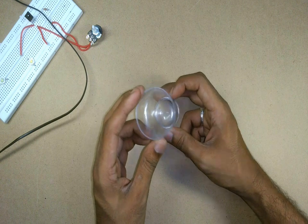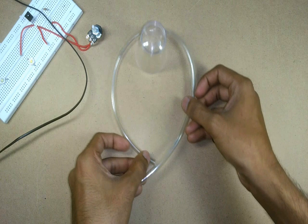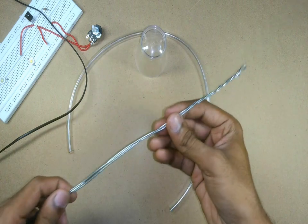We will be using this plastic glass as a reflector and to hold it we will be using this plastic pipe with 3 binding wires twisted together inside.